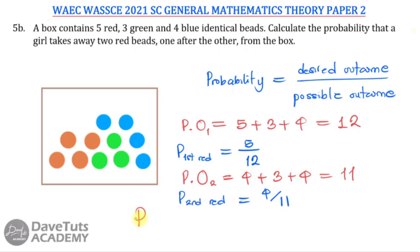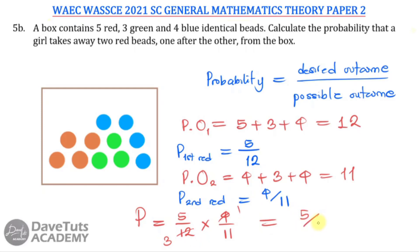The probability that the girl takes away two red balls one after the other is the product of the two individual probabilities: 5 over 12 multiplied by 4 over 11. Simplifying — 4 divides into 12 giving 3 — we get 5 times 1 over 11 times 3, which is 5 over 33. So the answer is 5/33.